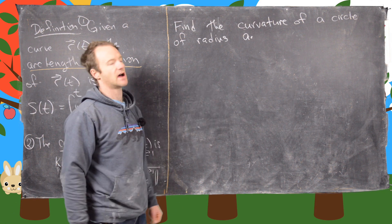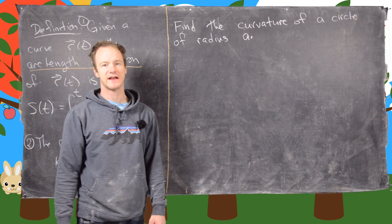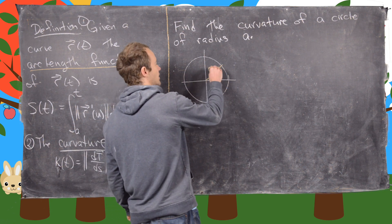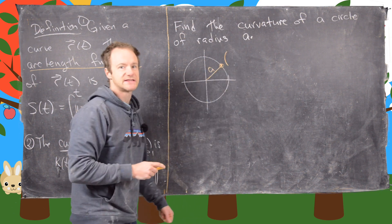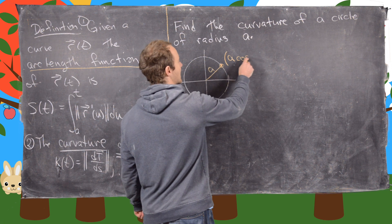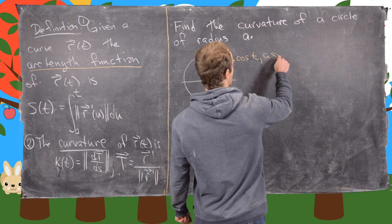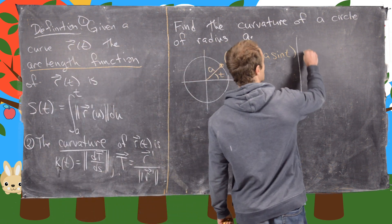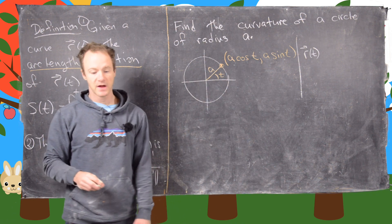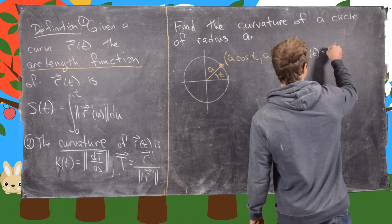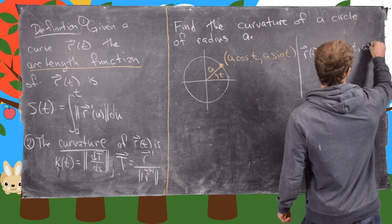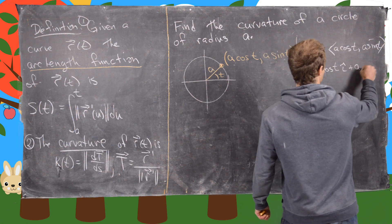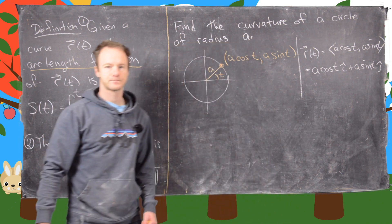As our example, we want to find the curvature of a circle of radius a. If we put a circle of radius a in the plane, standard trigonometric facts tell us the x-coordinate is a cosine t and the y-coordinate is a sine t, where t is the angle from the positive x-axis. This gives us a vector equation for the circle: r of t equals the vector (a cos t, a sin t), or equivalently a cos t in the i direction plus a sin t in the j direction.